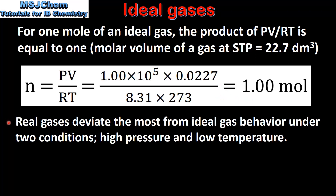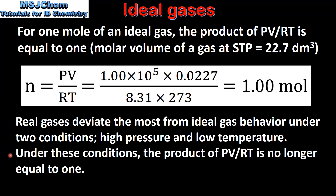Real gases deviate the most from ideal gas behavior under two conditions: high pressure and low temperature. Under these conditions, the product of PV divided by RT is no longer equal to 1.